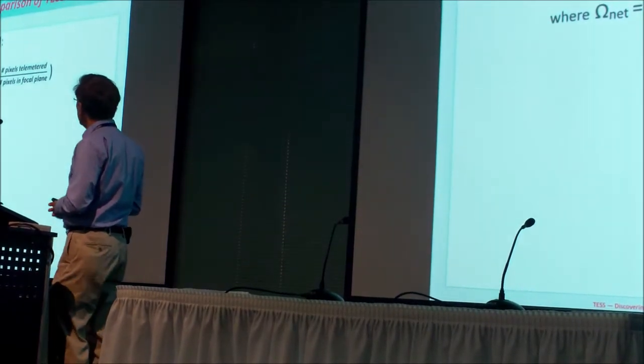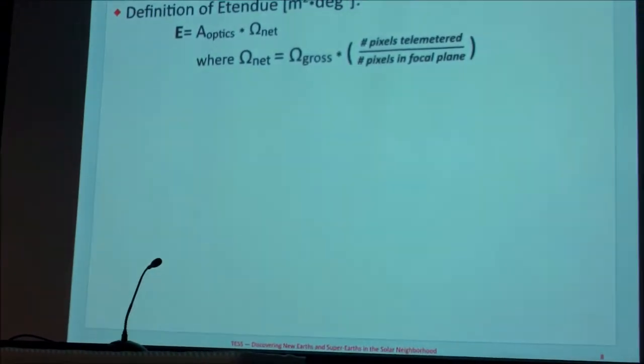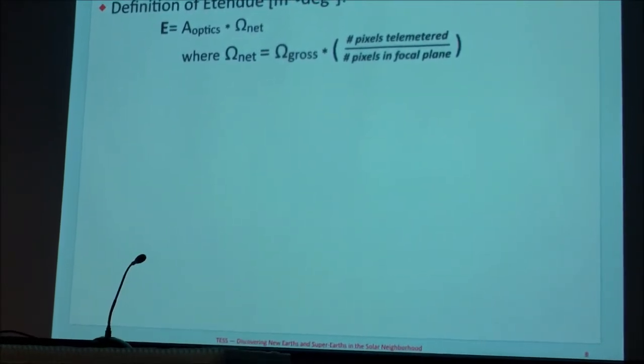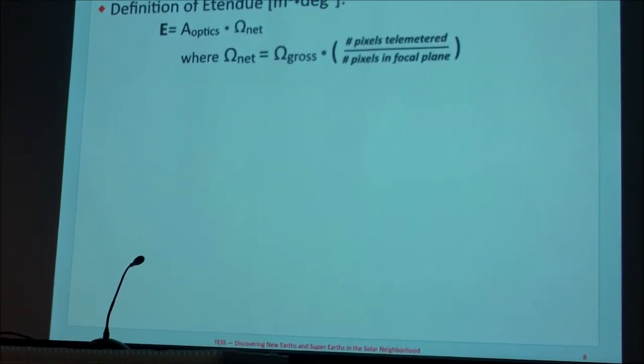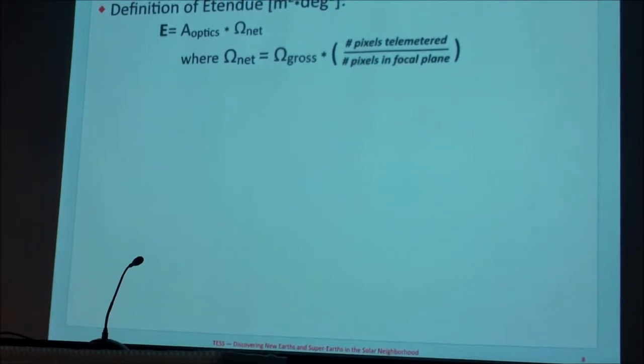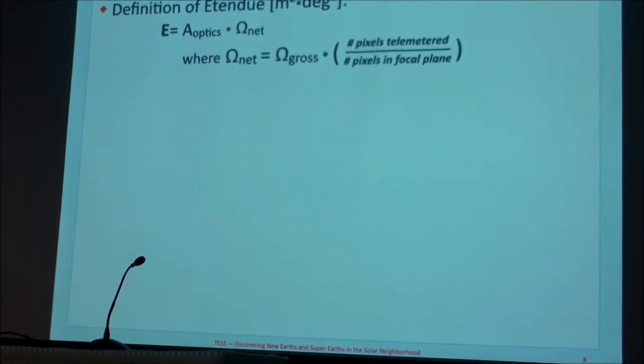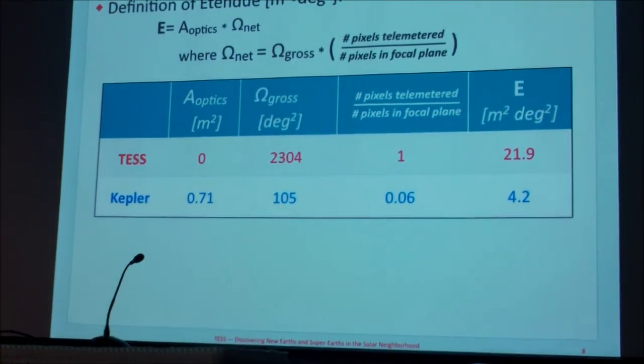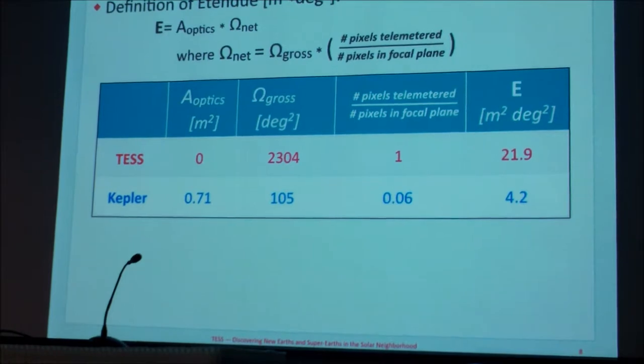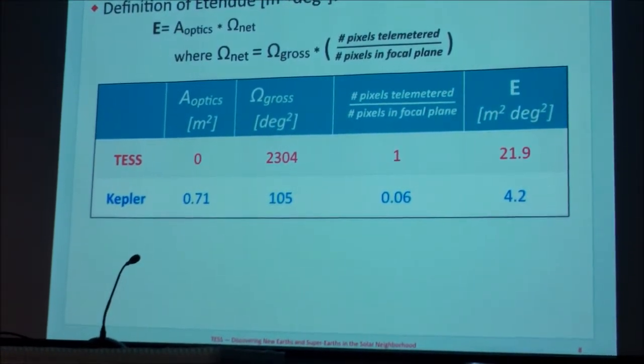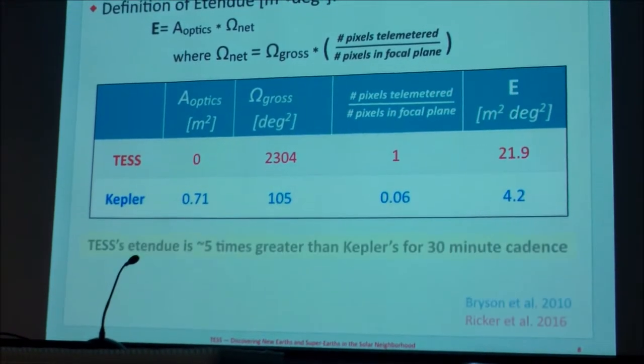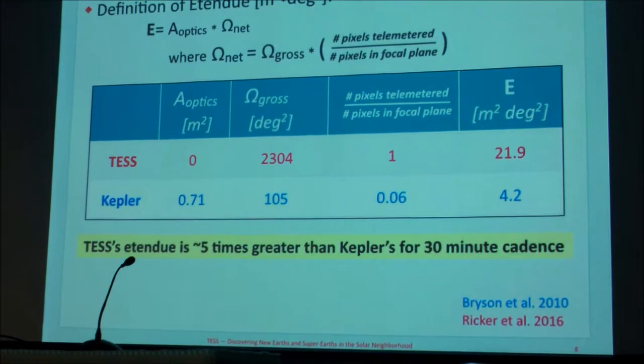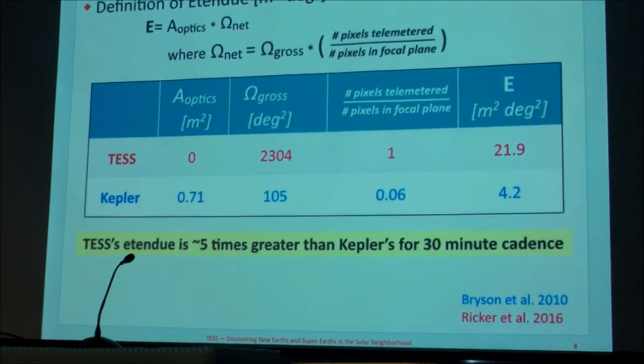Coming back to this concept of etendue and the comparison with Kepler as a standard. Some people may, over here on Wednesday, may recall that I commented that TESS was quarter of the etendue of Kepler. Ben Chappie actually pointed out that I had that wrong because there's another factor that comes in, which is the number of pixels that you read out compared to the number of pixels in the focal plane. So if you actually go through this more carefully and do the calculation based on the value of A, which I did get right, and the value of omega gross, which I also got right. But then this number was the one that I had wrong. And if you go through that calculation, then the etendue for TESS is about five times greater than Kepler for the 30-minute cadence. So that really, before it was comparable, and this made me realize that it's actually a little bit better than what we thought.